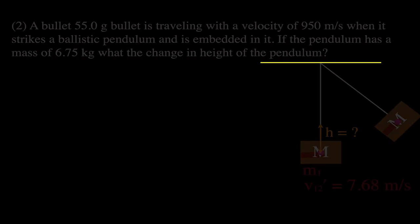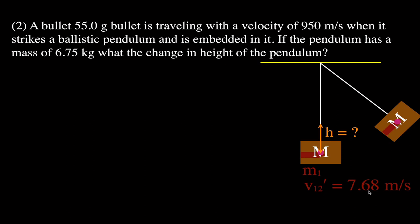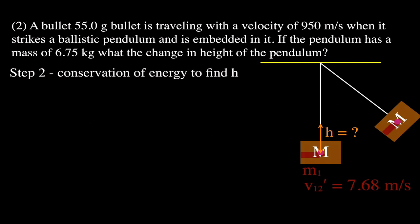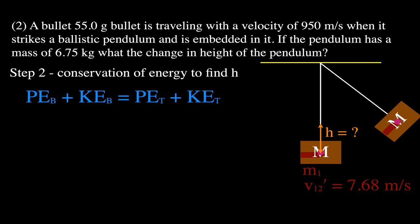Carrying that value over, we now use conservation of energy to find the change in height. Just like a basic pendulum problem: potential energy at the bottom plus kinetic energy equals potential energy at the top plus kinetic energy at the top. At the bottom it has no potential energy; at the top it has no kinetic energy. So kinetic energy at the bottom equals potential energy at the top.